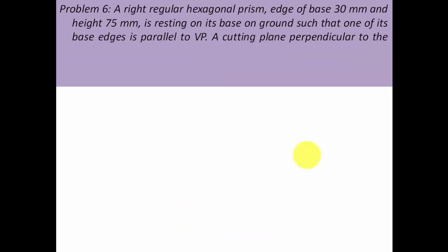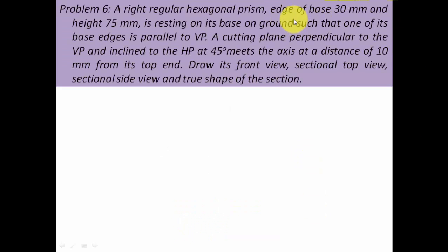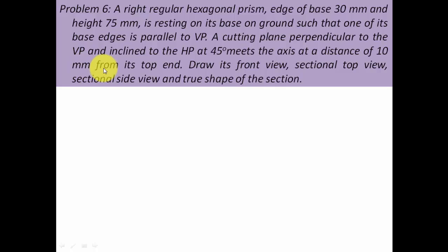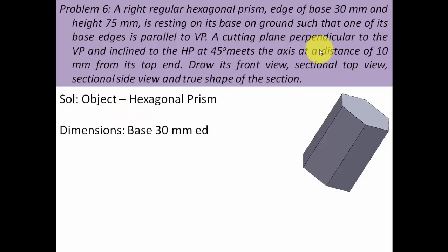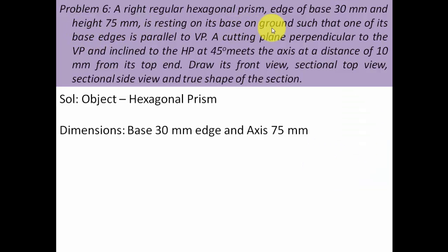The problem goes like this: a right regular hexagonal prism, edge of the base 30 mm and height 75 mm, is resting on its base on the ground. One of its base edges is parallel to the VP. The object we're dealing with is a hexagonal prism having base edges of 30 mm and axis length of 75 mm.